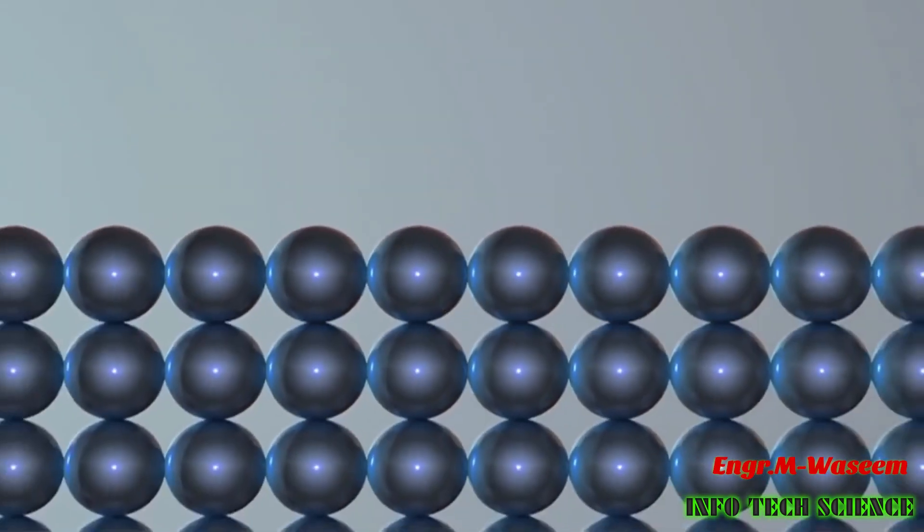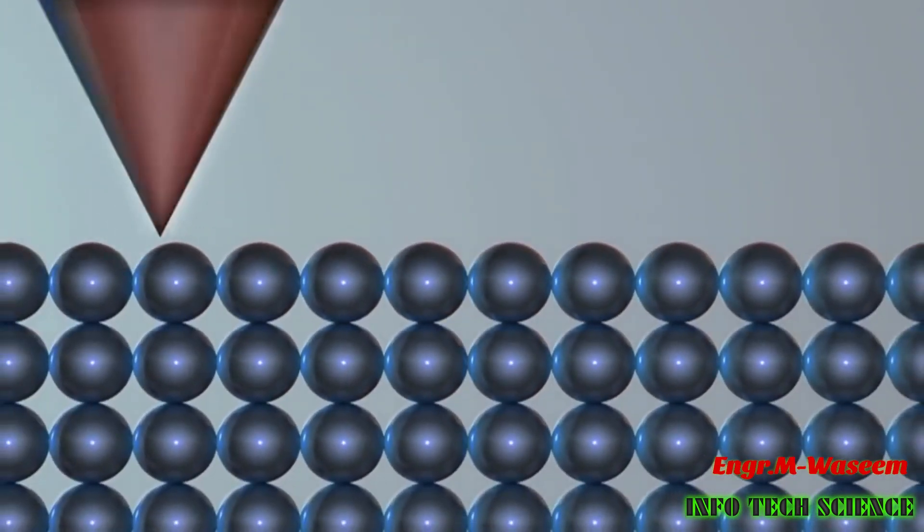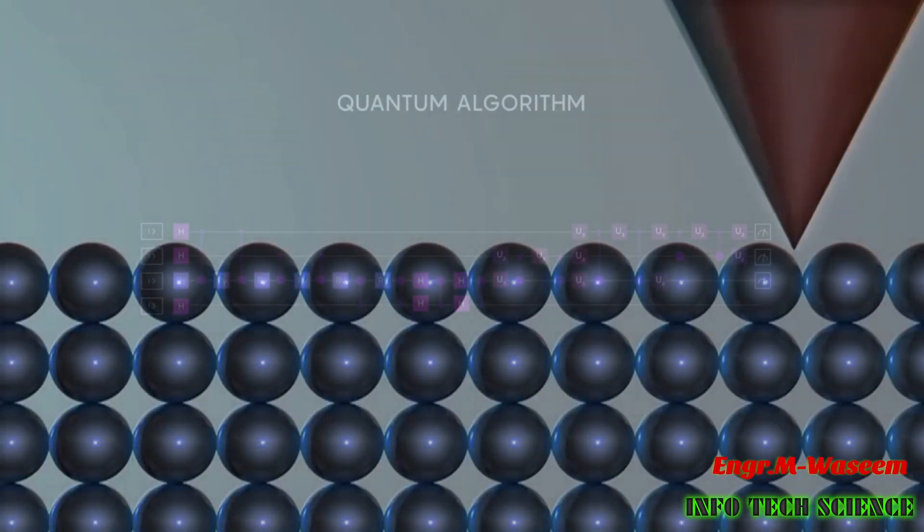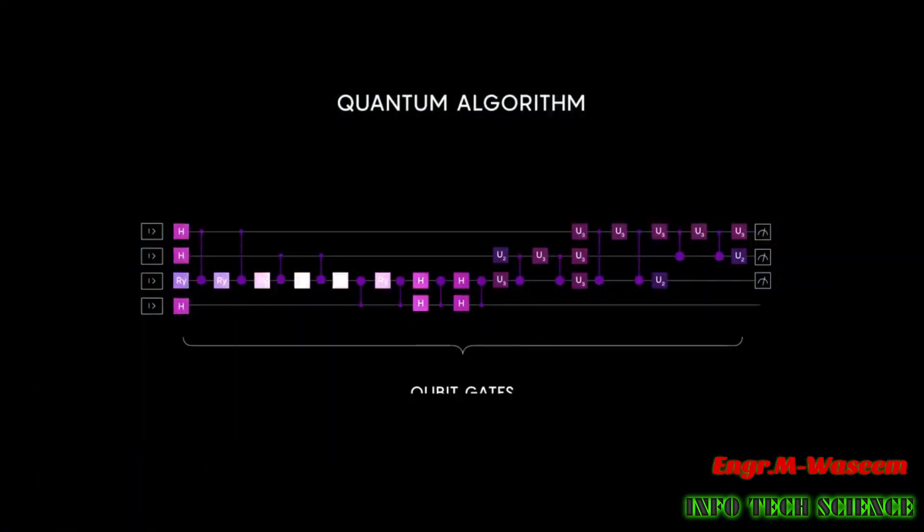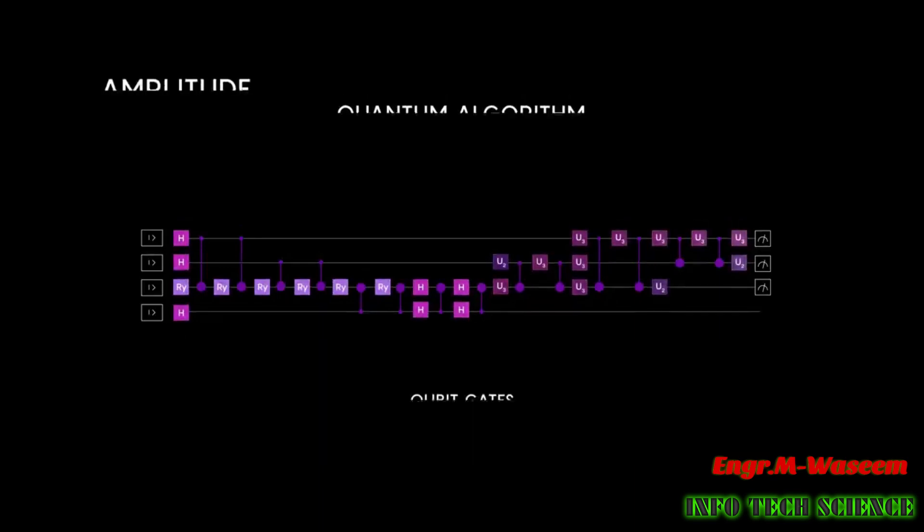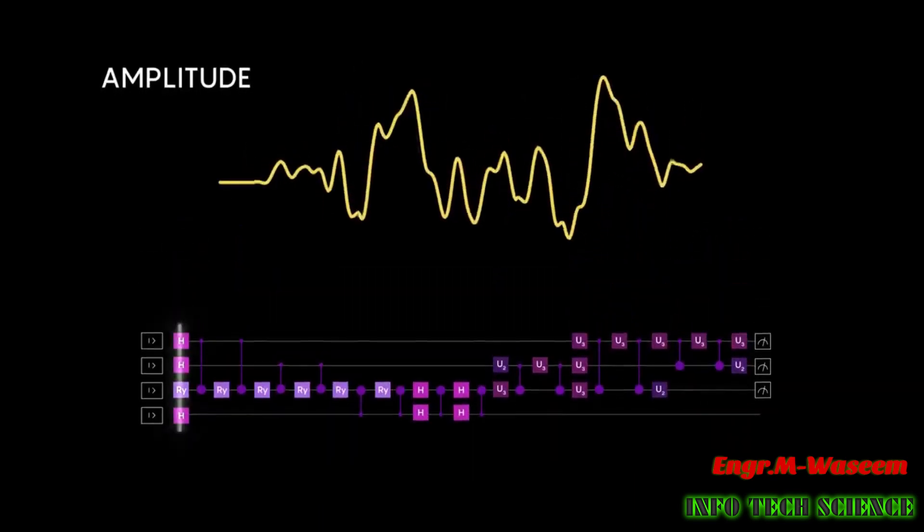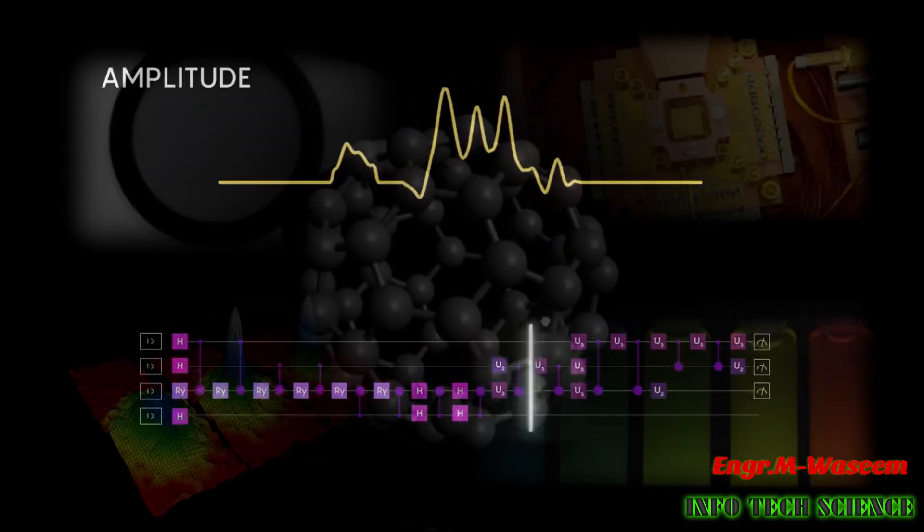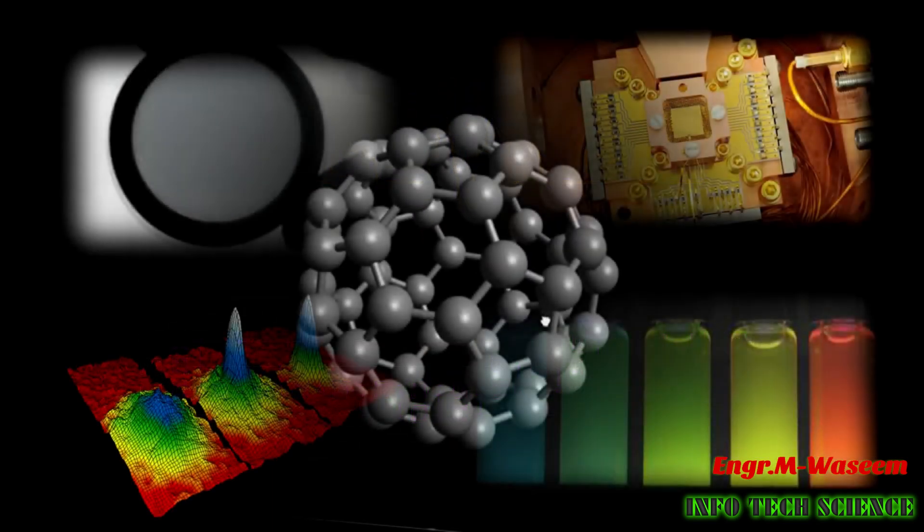When electrons pass through superconductors they match up, forming Cooper pairs. These pairs can carry a charge across barriers, or insulators, through a process known as quantum tunneling. Two superconductors placed on either side of an insulator form a Josephson junction. The IBM quantum computers use Josephson junctions as superconducting qubits.